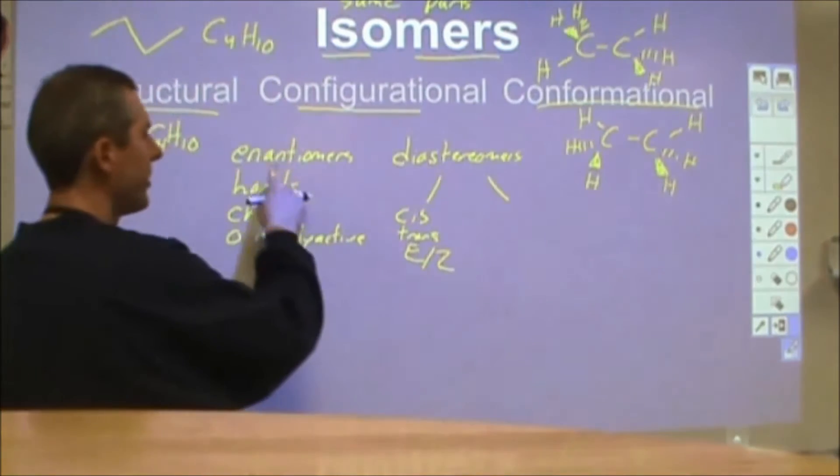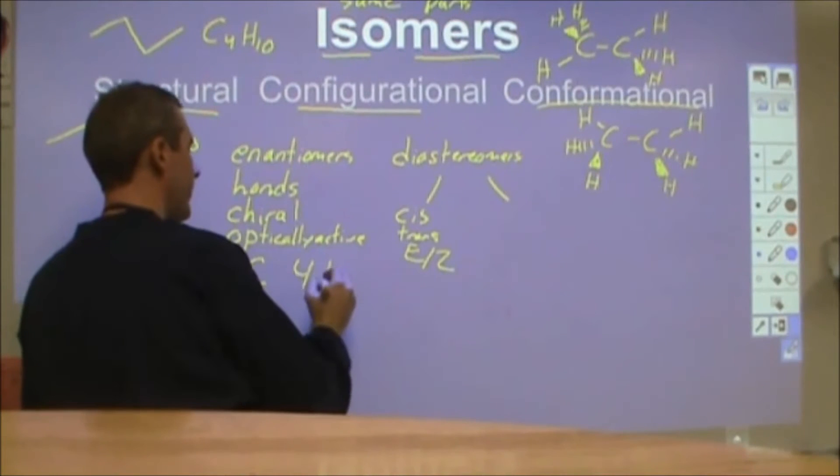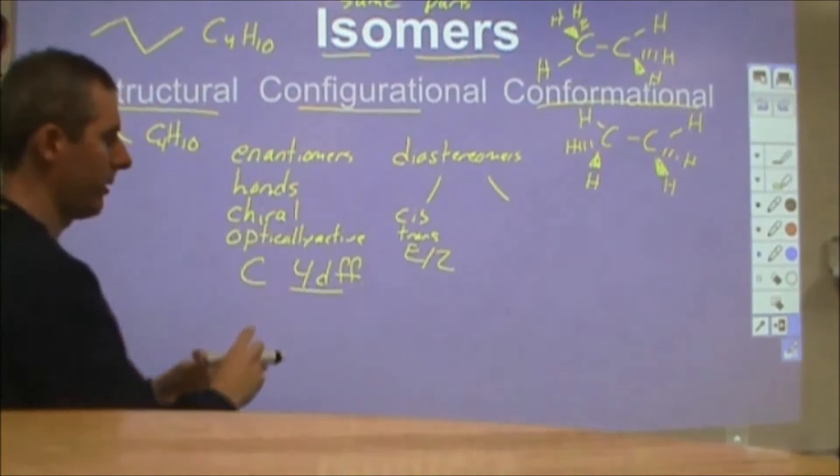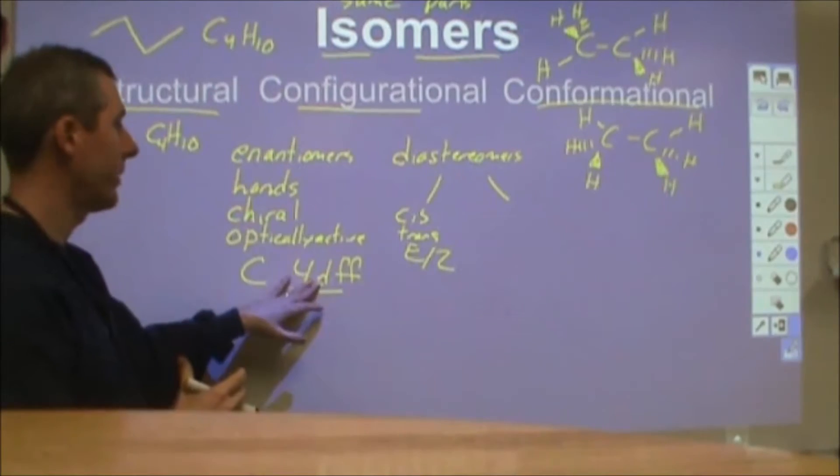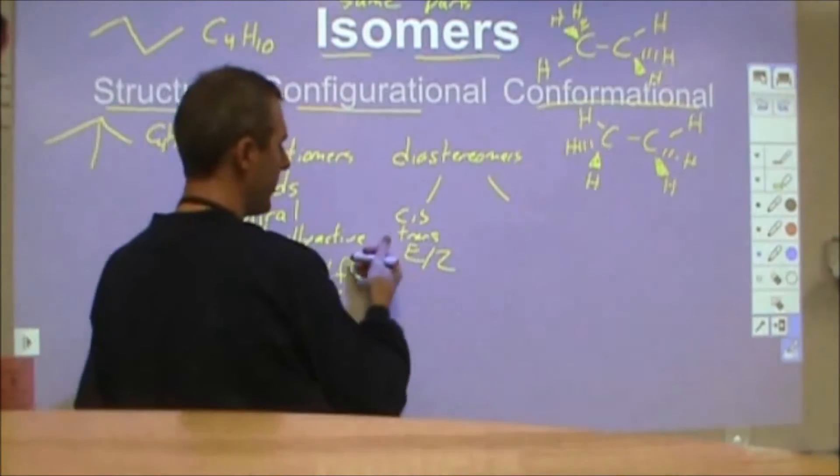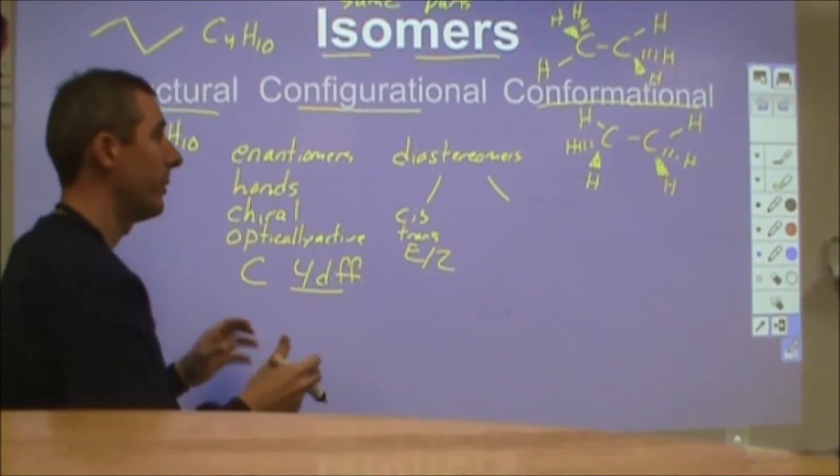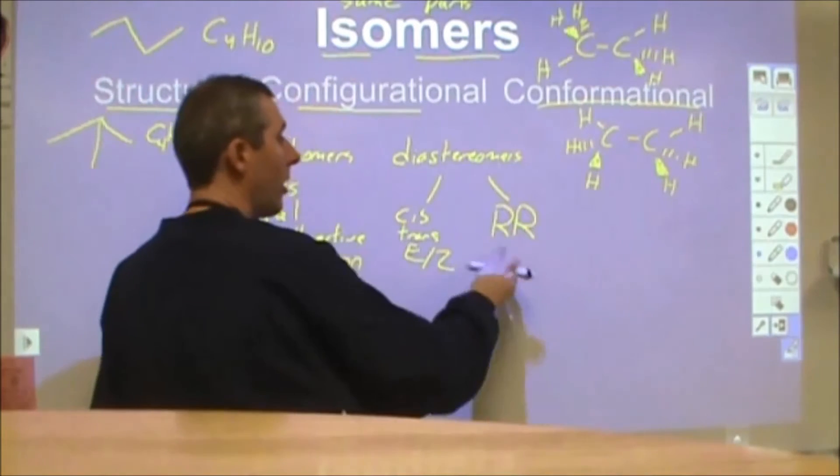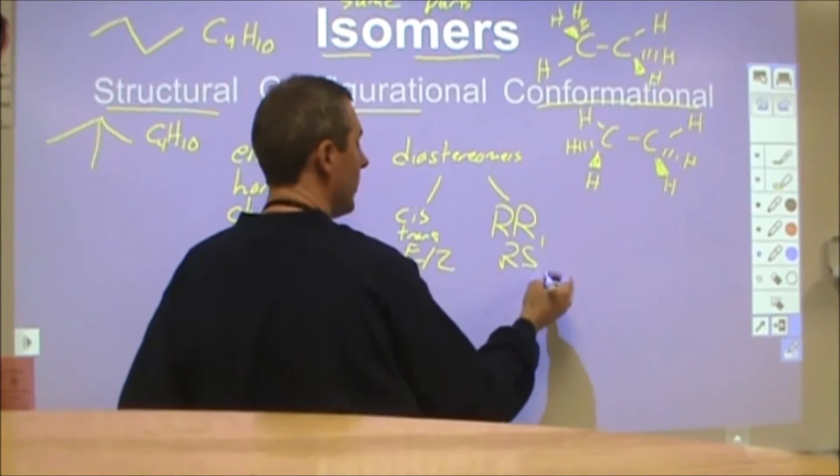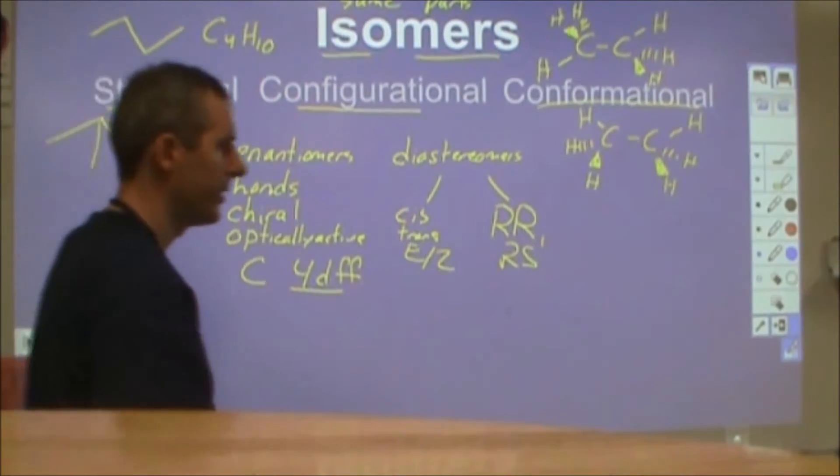The other kinds of diastereomers are similar to enantiomers in that these are derived with carbon with four different constituents. Sometimes there are molecules that will have two different carbons that are these stereocenters where they have four different things attached. There are some of those molecules that will be very similar to enantiomers but actually not mirror images. Basically things that are R versus RS will not be enantiomers but they would be diastereomers.